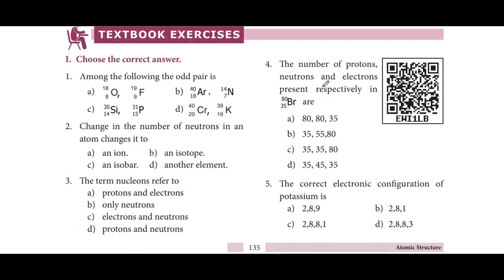Section 1: Choose the correct answer. Among the following, the odd pair is — the answer is option B.